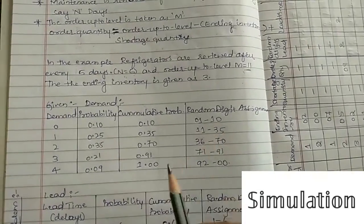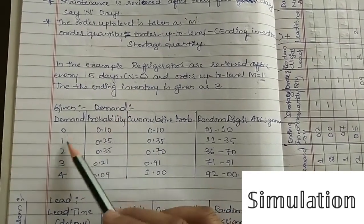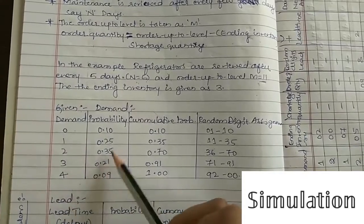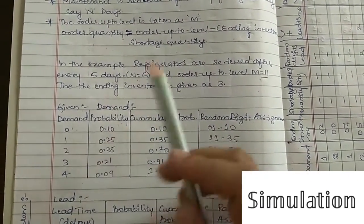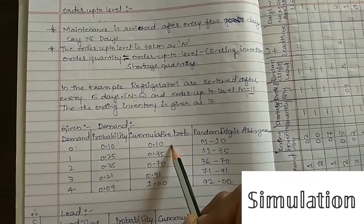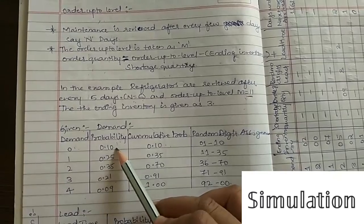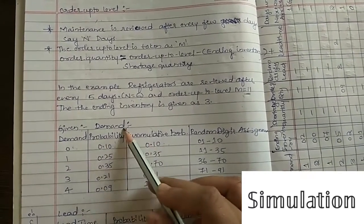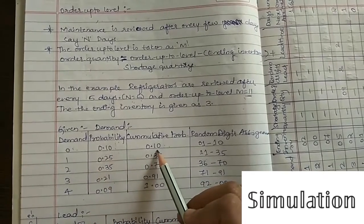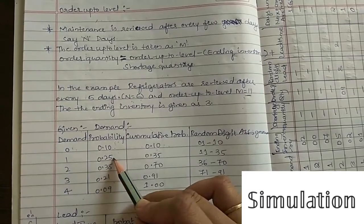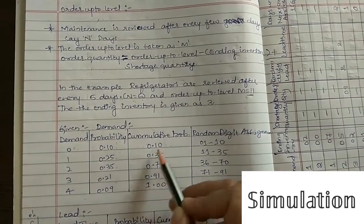For the given problem, demand ranges from 0 to 4 with given probabilities. Using the standard procedure, you find the cumulative probability by adding each probability to the previous one. So 0.10 plus 0 is 0.10; 0.10 plus 0.25 is 0.35; 0.35 plus 0.35 is 0.70, and so on.